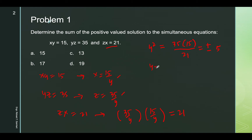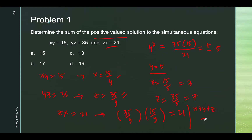We only take the positive value because we're only after the sum of the positive value solutions. Knowing y equals 5, we can solve for x: 15 over 5 equals 3. And for z: 35 over 5 equals 7. Therefore x plus y plus z equals 15, so the answer is letter A.